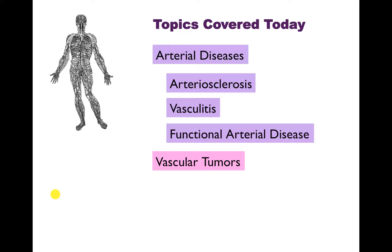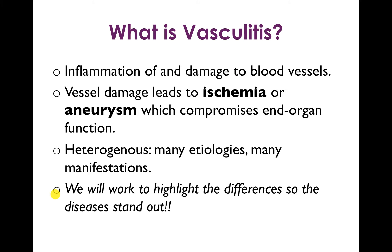In the second webcast, we're going to pick up on vasculitis, which really represents the heart of this lecture because it's the hardest set of diseases to wrap your head around. Vasculitis means inflammation and damage to the blood vessels. When you damage and inflame the blood vessels, you can lead to luminal obstruction, which can lead to ischemia, or you can lead to aneurysm or dilatation of the vessel. Either of these can compromise end-organ function, although usually what predominates is ischemia.